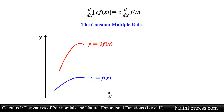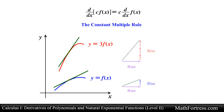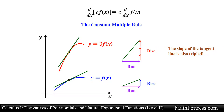Recall that you can interpret this operation as a transformation. In this case the product will stretch the graph vertically by a factor of 3. This transformation also affects the slope of the tangent line — the change in y, also known as the rise, will be tripled but the change in x or run will remain the same. This means that the slope of the tangent line will be tripled, hence the Constant Multiple Rule.